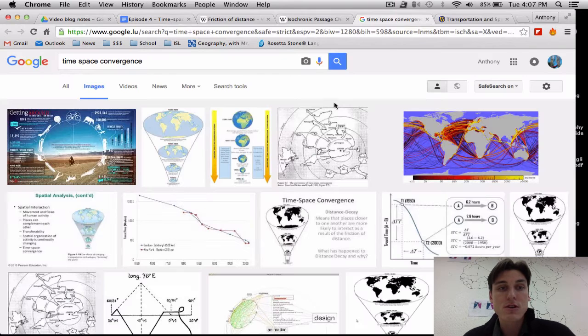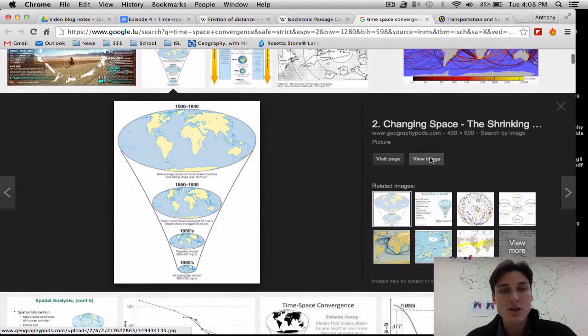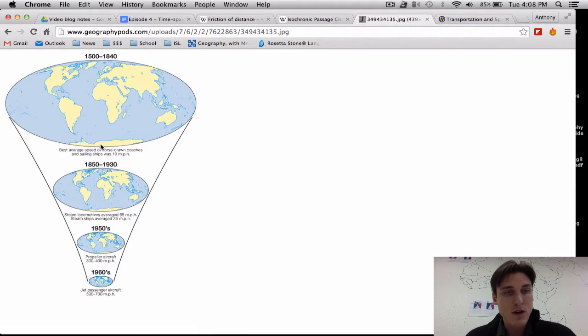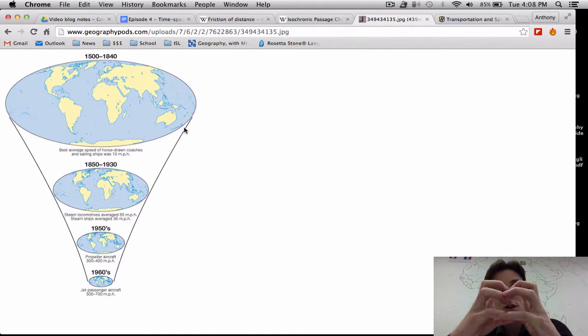All right. If you search time-space convergence, what you'll end up with is, in an image search, images like this which show how, as a result of changing technology, the world has shrunk. Shrunk. I put it in quotes because the world is not physically shrinking. We know that.